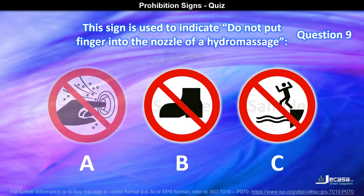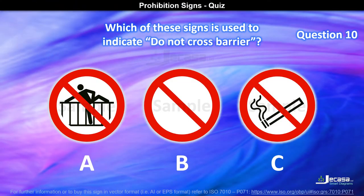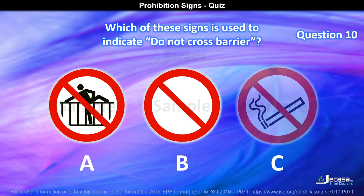Question 10. Which of these signs is used to indicate do not cross barrier? Is it A, B, or C?